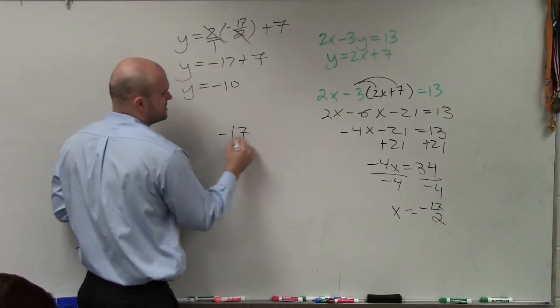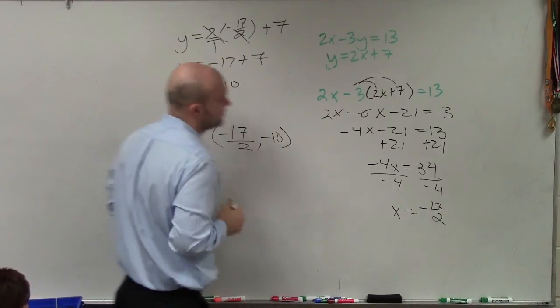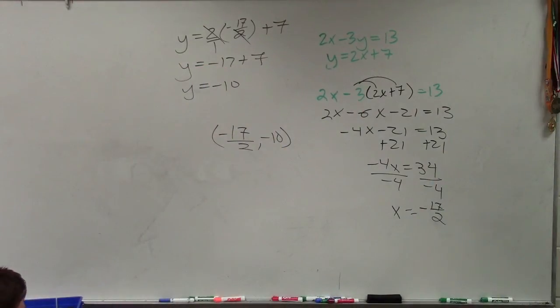Therefore, the coordinate point is negative 17 halves, comma negative 10. Why would you look at my base? Where did you get the 7 from?